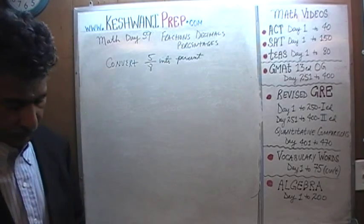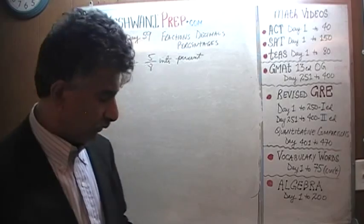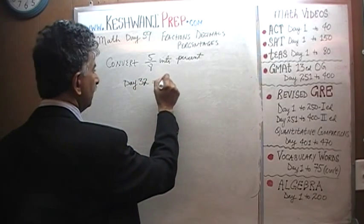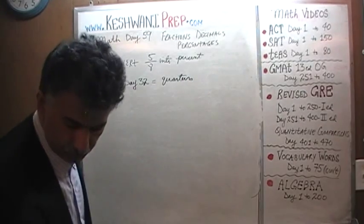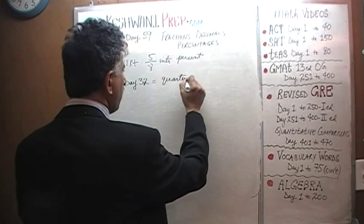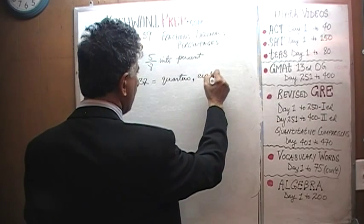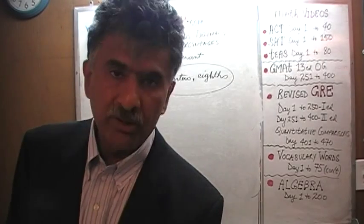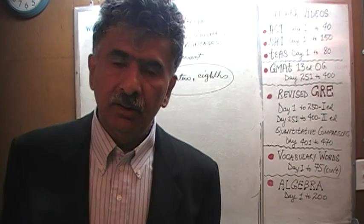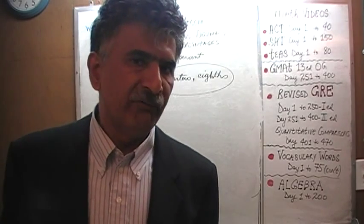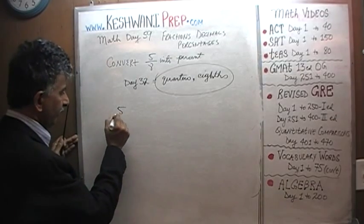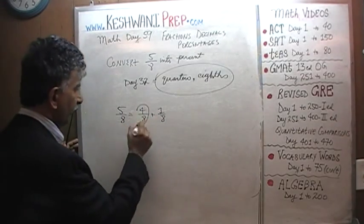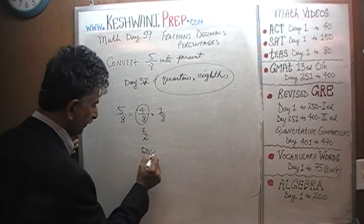5/8 into percent and decimal. Now 5/8, as you recall — or I hope you do — has to do with eighths. On Day 32 we learned our quarters and our eighths. Eighths are derived from the quarters. For example, 5/8 is the same as 4/8 plus 1/8. And 4/8 is simply a half, which is 50%. So that part was easy.